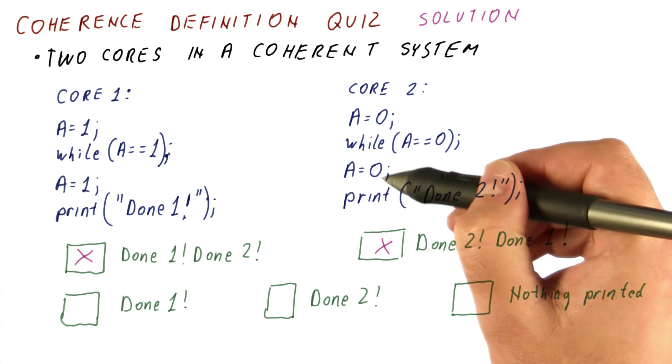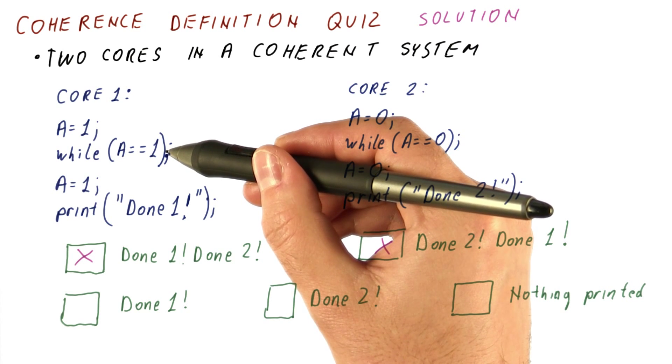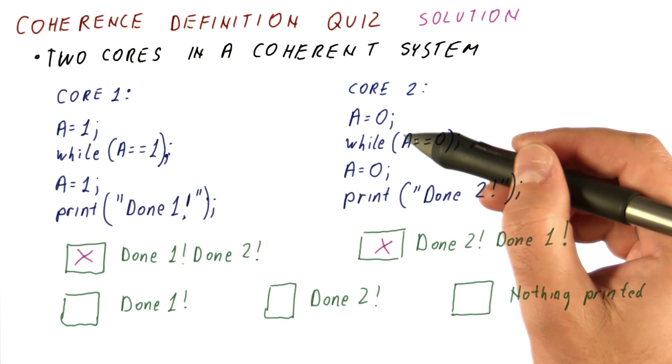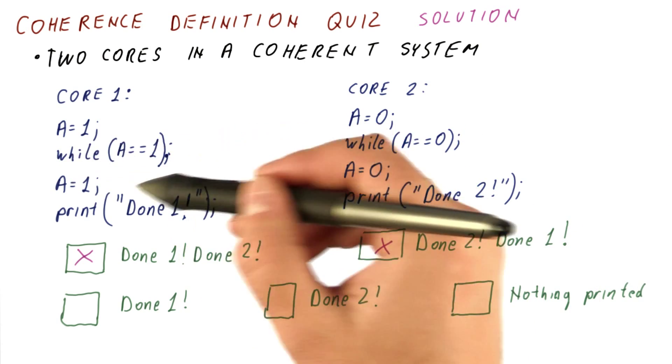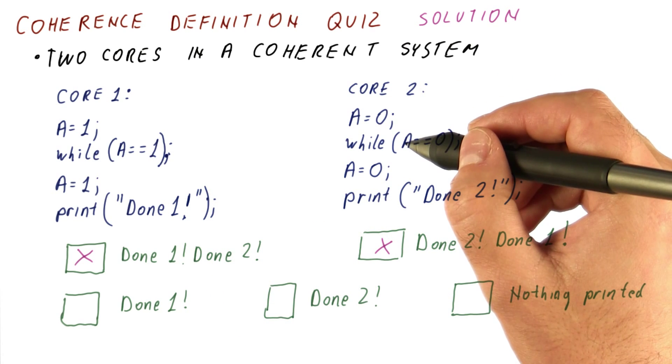Once it proceeds, it's going to set A to zero. Core one has to see that, because of the second part of the definition, and proceed. So it's not possible to get core one stuck here, by just moving the A equals zero to the beginning.